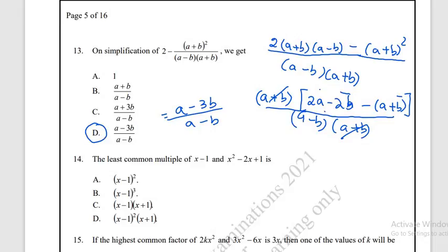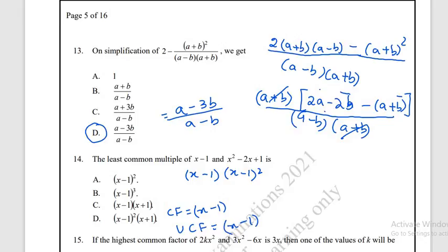Question number 14: find the LCM of (x − 1) and (x² − 2x + 1). Factorizing x² − 2x + 1 gives (x − 1)². The common factor is (x − 1) and the uncommon factor is also (x − 1), so the LCM is (x − 1)². The correct answer is option A.